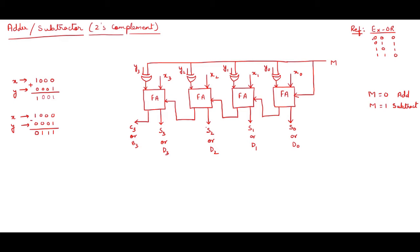Just for a recap: 0 XOR 0 is 0, 0 XOR 1 is 1, 1 XOR 0 is 1, and 1 XOR 1 is 0. Now I will put the values of X starting from X0 to X3: 0, 0, 0, 1. And the y values from the top: 0, 0, 0, 1.